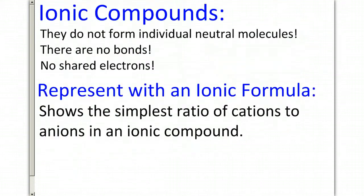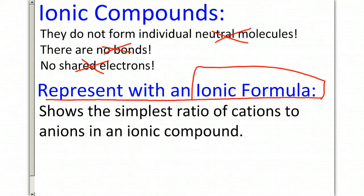Ionic compounds do not form individual neutral molecules. That's what covalent bonds do. There are also no bonds in an ionic compound. There's no shared electrons. Ionic compounds are completely opposite of a covalent bond. We represent an ionic compound with what's called an ionic formula, and this is what we're about to learn how to do.